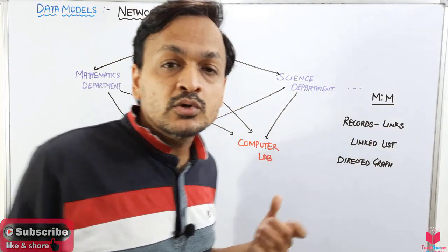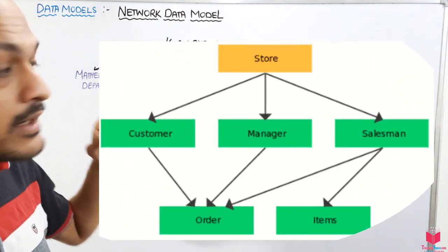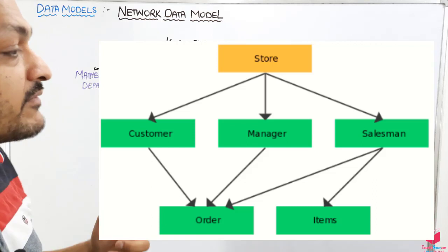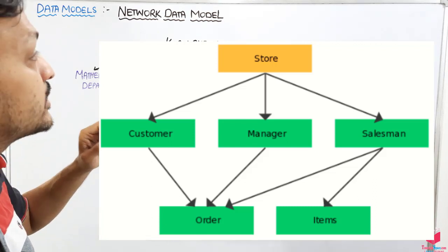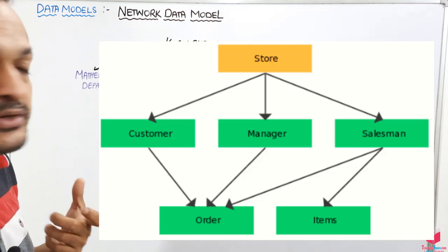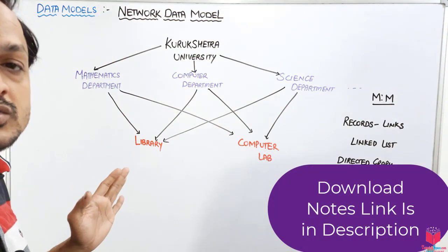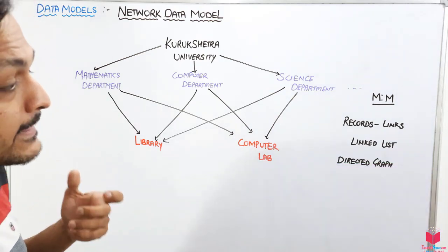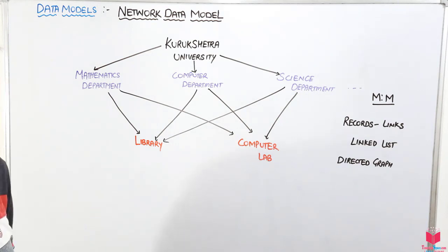In this network data model, there are records and links. Records are the attributes of this model, and links are the connections between two attributes or entities. We implement this concept using a linked list with pointer concepts, which represent the address of the next attribute or value.